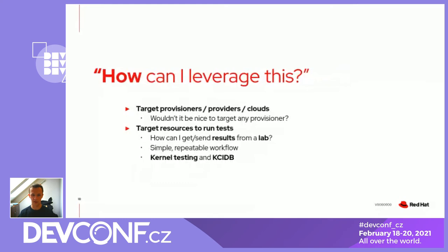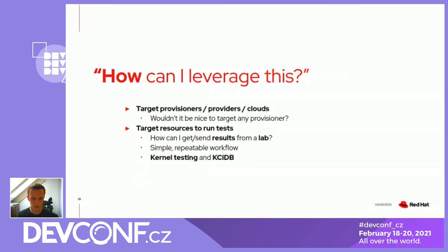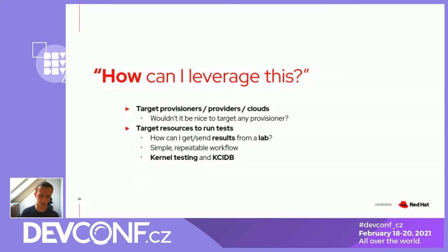The main part: how can you leverage this? If you're listening, hopefully you're someone who wants to target different provisioners and providers. It would be really nice to have one way to say 'I want this resource — a machine with this many gigabytes of RAM from AVS, from Azure, from whomever.' It can also be useful if you want to target resources to run tests or workloads, or if you have special hardware in a lab that is somehow isolated and only accessible via SSH. It can be useful for a simple, repeatable workflow and, of course, for kernel testing.